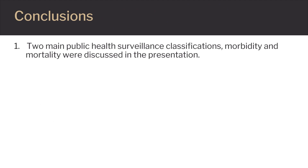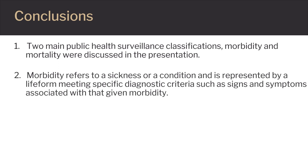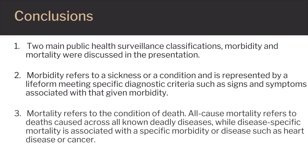Two main public health surveillance classifications, morbidity and mortality, were discussed in this presentation. Morbidity refers to a sickness or condition and is represented by meeting specific diagnostic criteria — such as signs and symptoms associated with that given morbidity — while the term mortality refers to the condition of death. Common types of morbidities, as well as those morbidities associated with all-cause mortality, were highlighted.